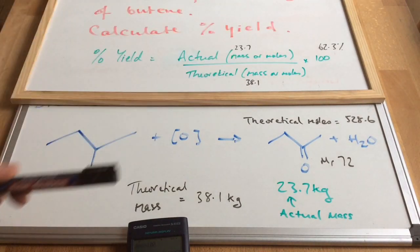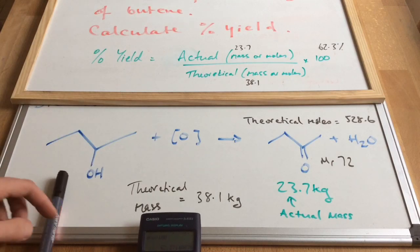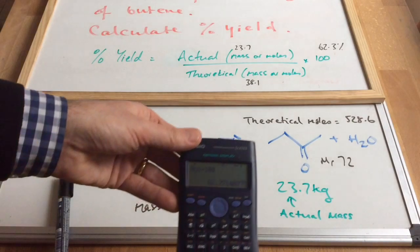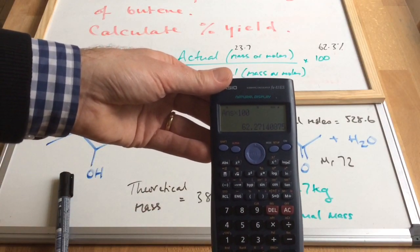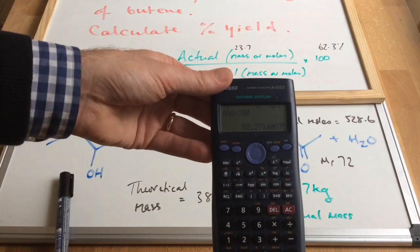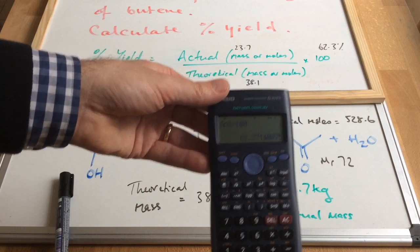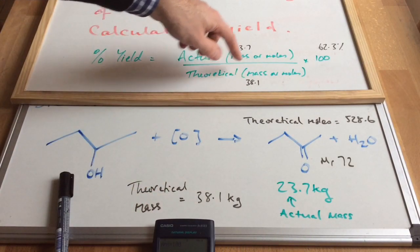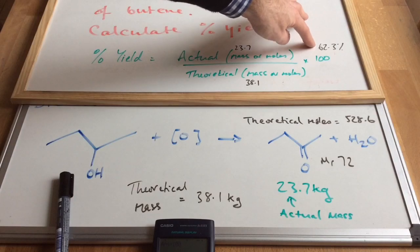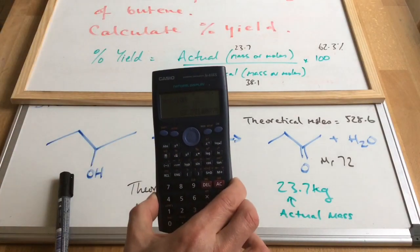Now I've used the calculator values, I've just kept the calculator values in here and I'm getting that 62.27 etc which obviously rounds to 62.3 percent. If you use your rounded values here you'll actually get 62.2 percent, so top tip: keep the number in your calculator.